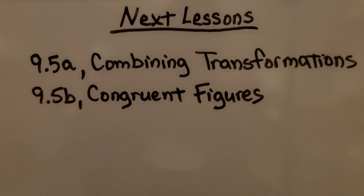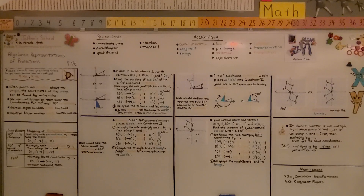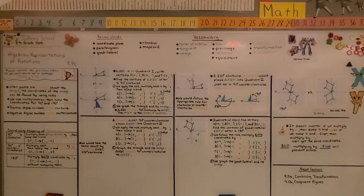We're finished with 9.4 and moving on to 9.5, where we'll be talking about combining transformations. We can combine translations with reflections — these are actually called glide reflections. Please join me for the next lesson and have a great day. Bye!